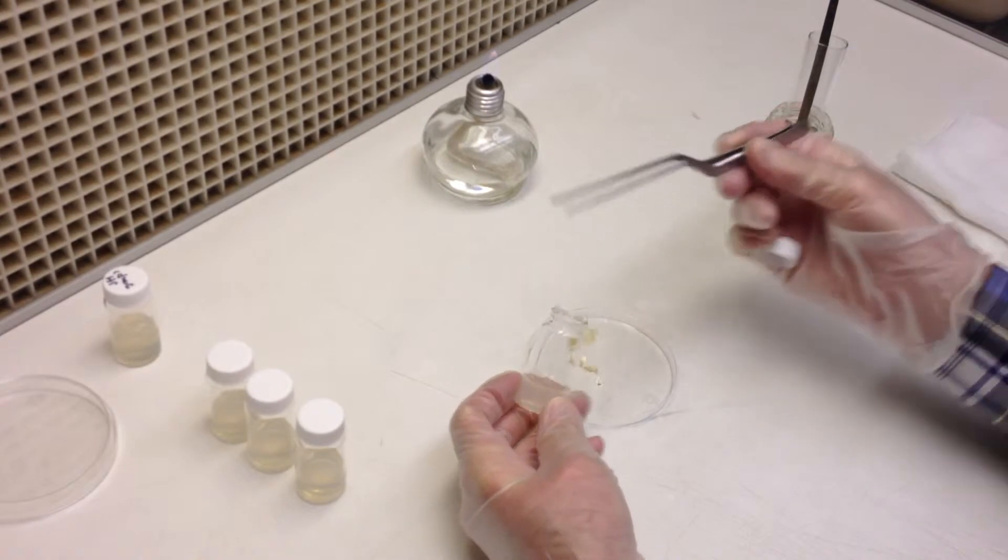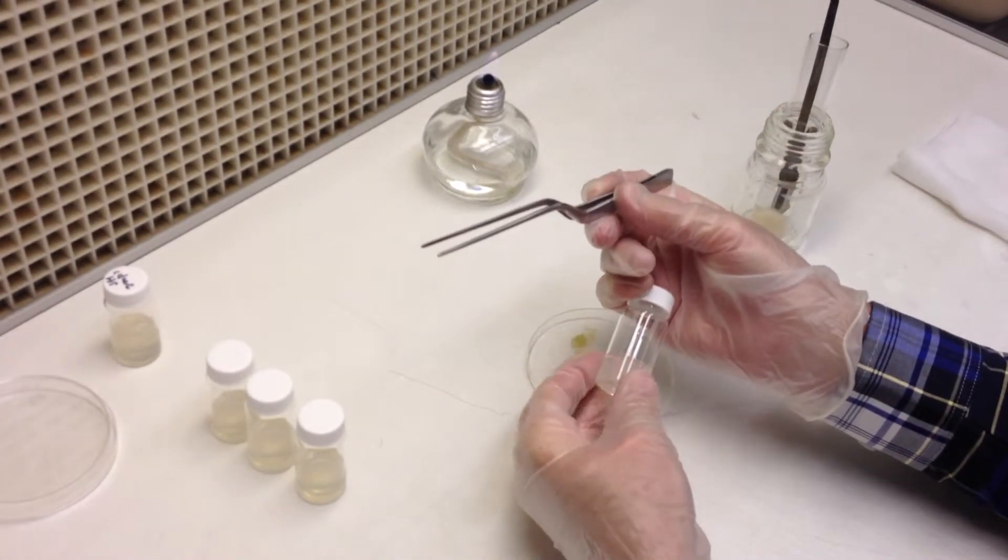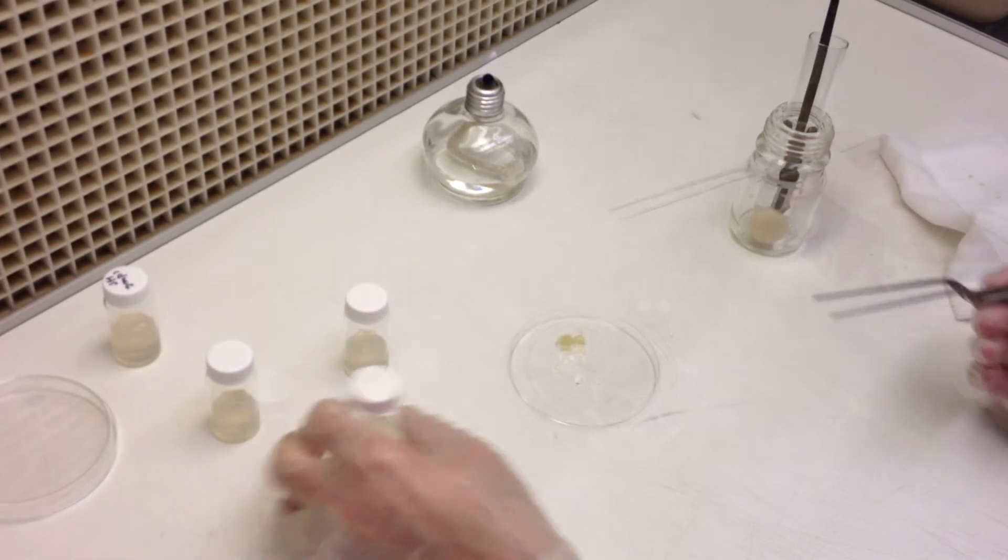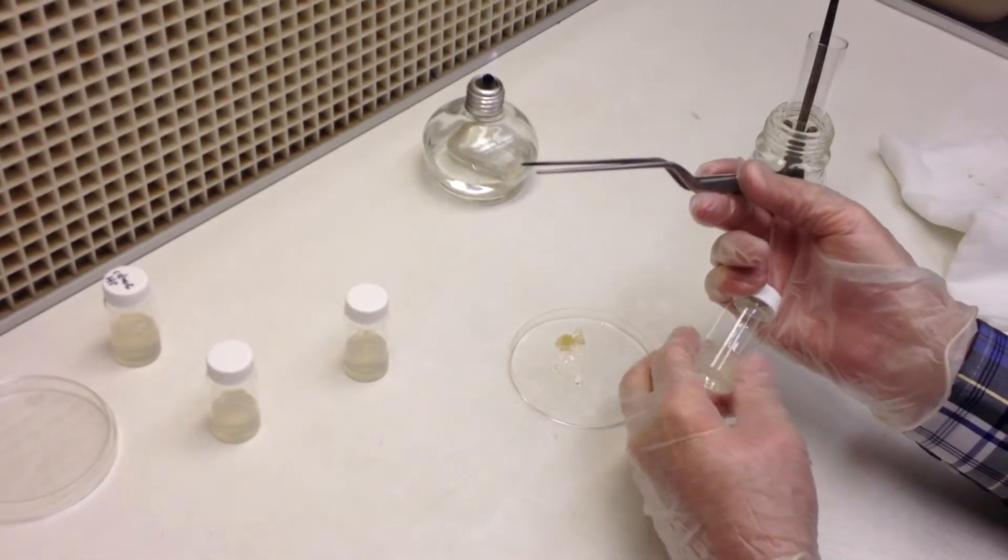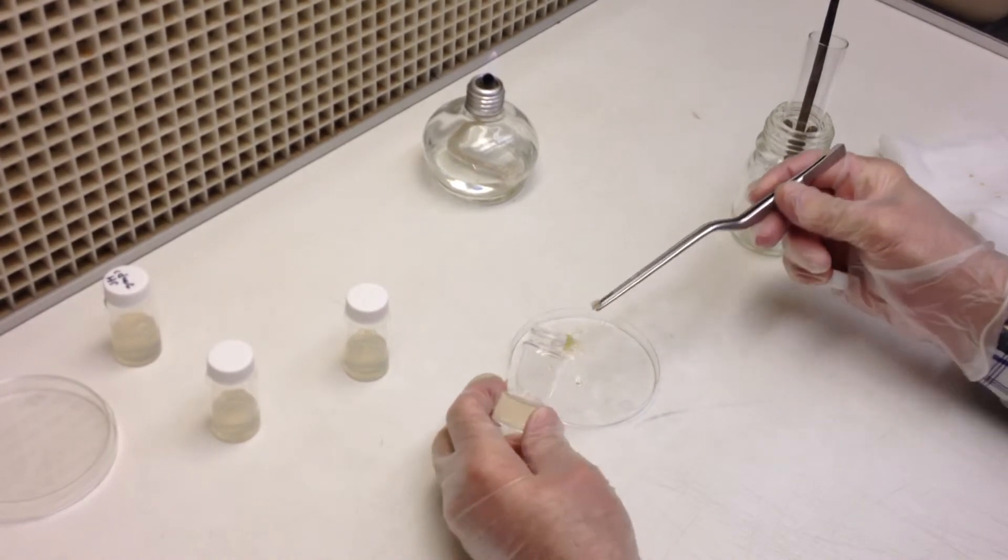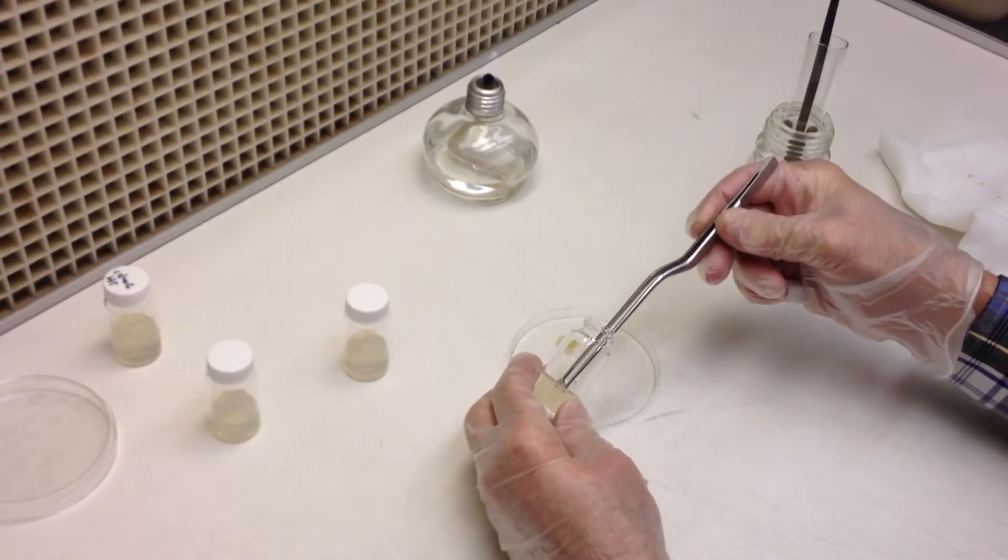Something like three millimeters in diameter, an eighth of an inch or so is about right. And you'll be doing six total. You'll be doing two pieces onto the same medium that they came from. And so what's going to happen there is the callus should just continue to grow.